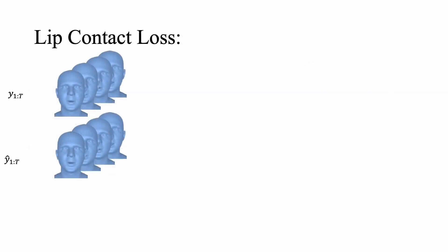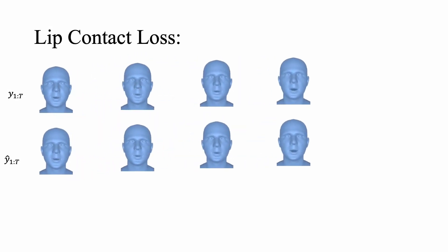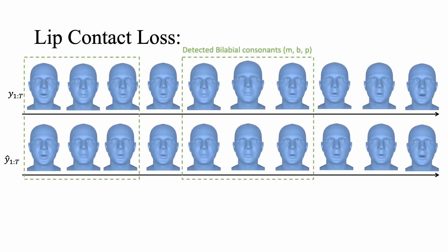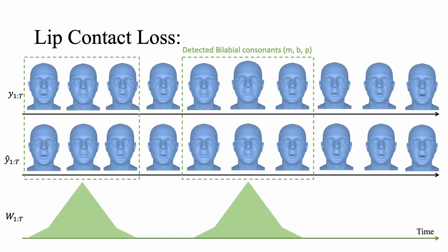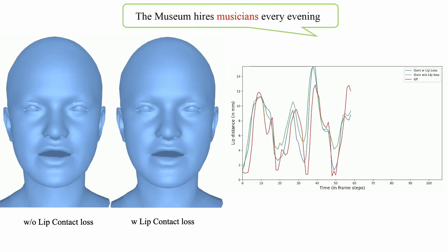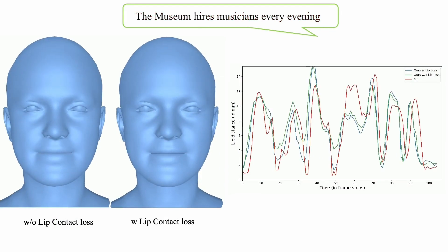To this end, we detect the bilabial constants in the training set and establish a lip closure loss with according weights to improve the lip closures. Here we illustrate how our lip contact loss improves the lip closures. We see that our method improves the lip closure when the words 'museum' and 'musicians' are pronounced. This is also visible in the lip distance graph shown on the right.